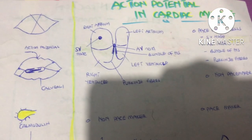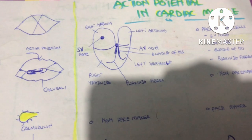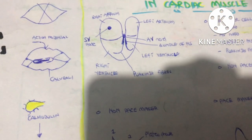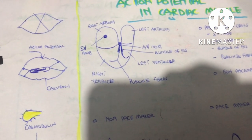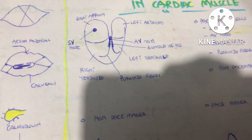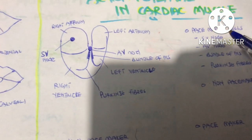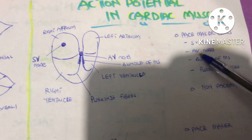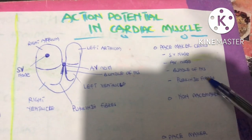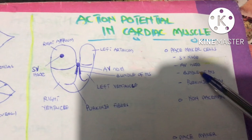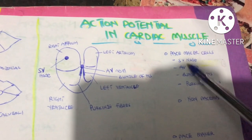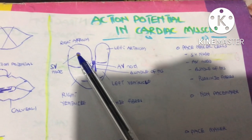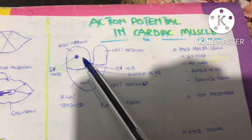Now let's look at action potential in the cardiac muscle. The cardiac muscle has two types: pacemaker cells and non-pacemaker cells. Cardiac muscle exhibits autonomy — it can initiate its own action potential — done by the pacemaker cells: the SA node, AV node, bundle of His, and Purkinje fibers. They act like nerves but are not nerves. The SA node is the first to generate the action potential, located in the right atrium.